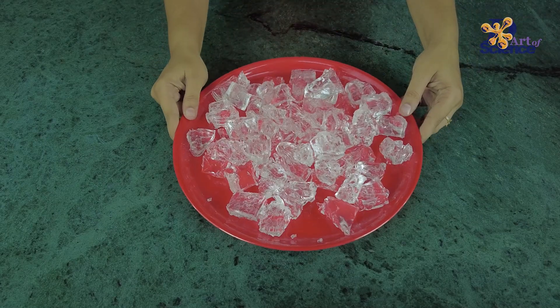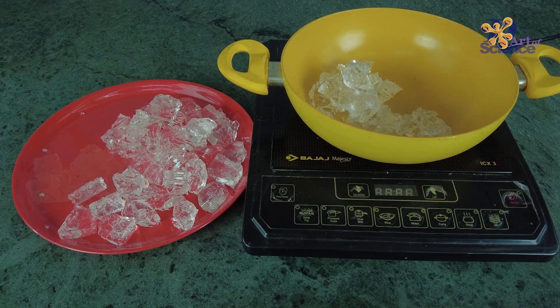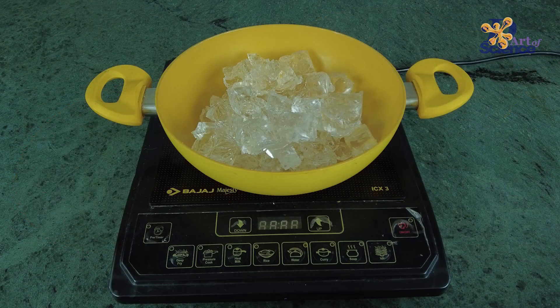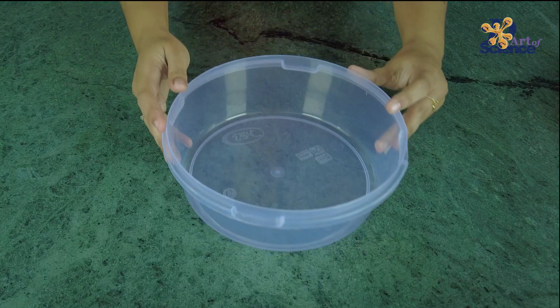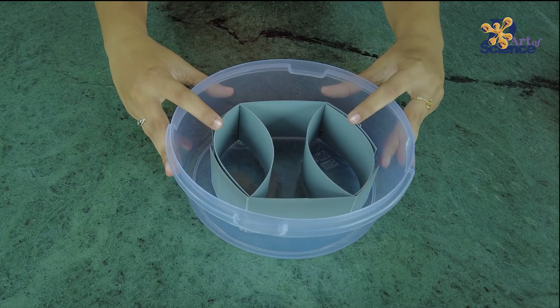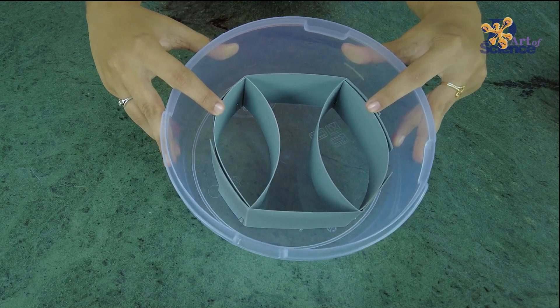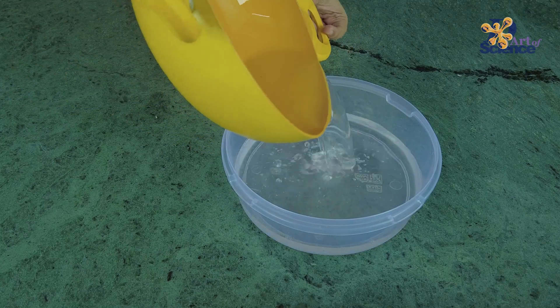Take some transparent gel wax that is used in candle making and melt it. Take a plastic or steel container with a flat bottom. Make sure that it is big enough to make room for the mold. Pour the wax into the container and place the mold inside it.